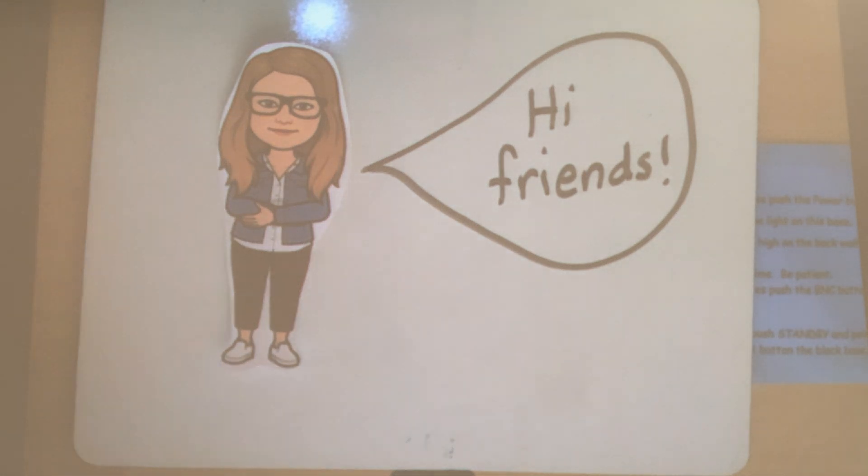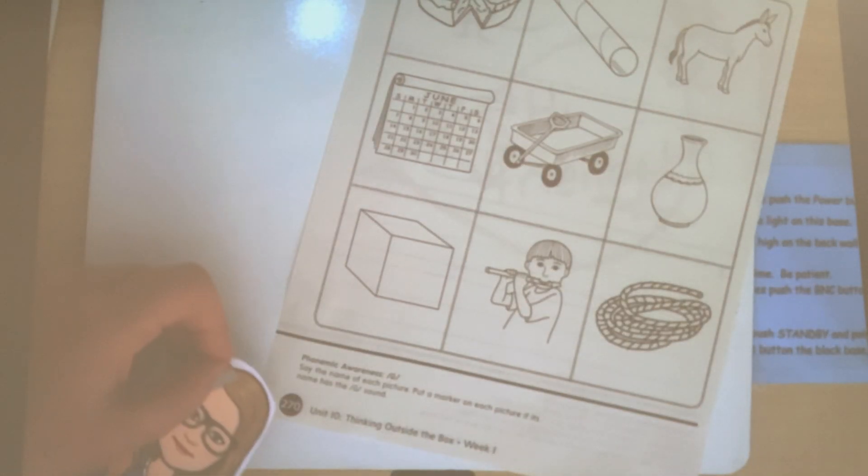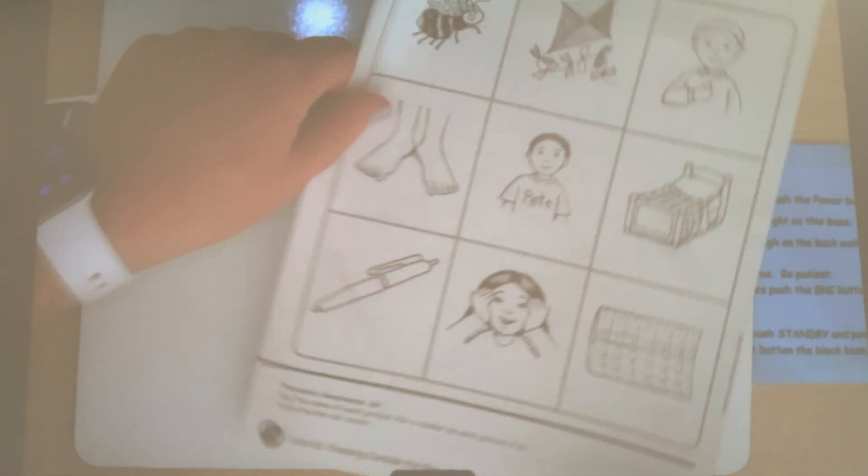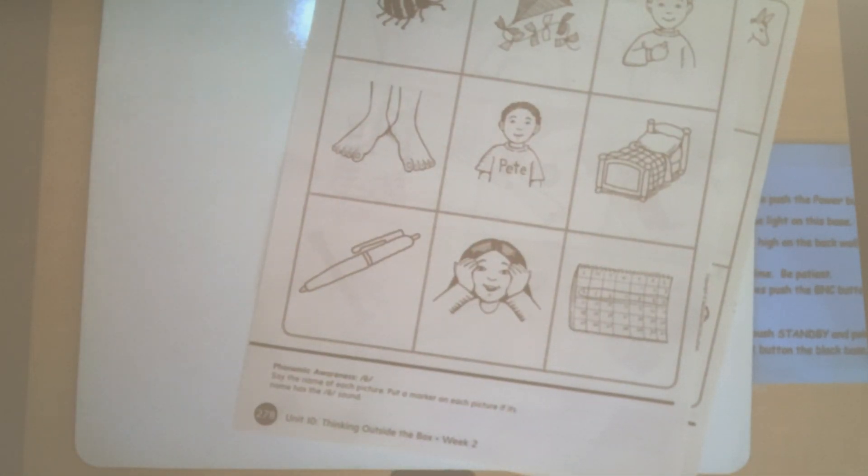Today we are going to be doing two pages out of our Wonders book and it's about the long U sound, the OOO and U, and the long E sound, EEE. So we are going to be working on page 270 and page 278. So go ahead and take those out please and get out a pencil and let's do it.